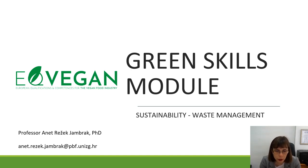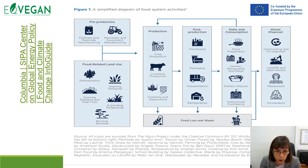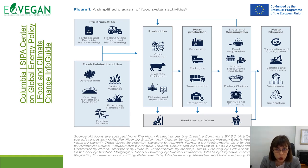When discussing sustainability, we need to think about waste management. In this Green Skills module regarding sustainability, it is really important to discuss waste management. Through the entire food system and production, we can minimize the production of waste during the entire chain — from production, post-production, diet and consumption, and waste disposal — we need to think about food loss and food waste.